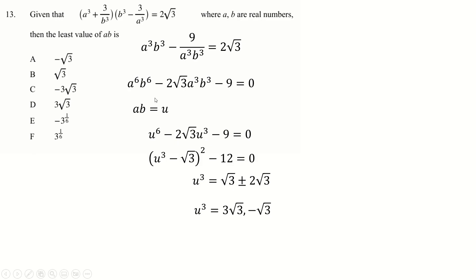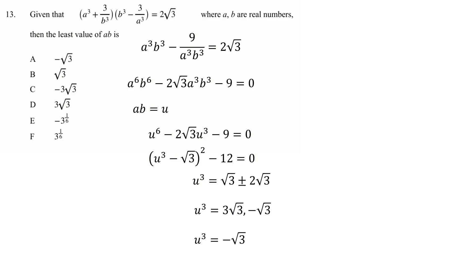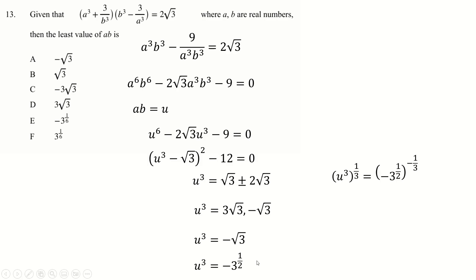We're asked for the least value, so we take the smaller of the two solutions for ab. Then to find a·b from that, note it was raised to the power of half, so cube-rooting means raising to the power of a third, and multiplying (1/2)×(1/3) gives a power of 1/6. So the answer is E.